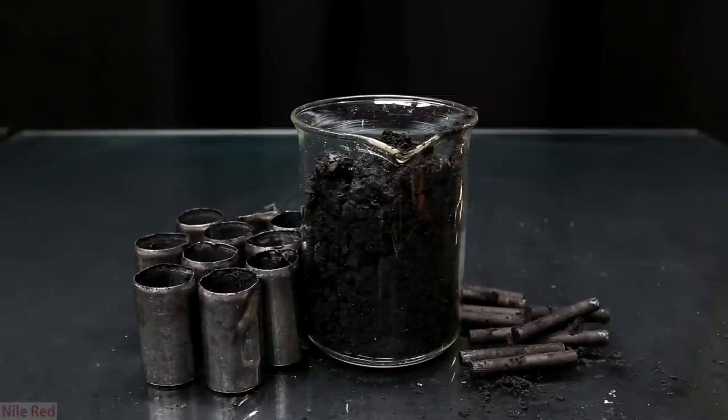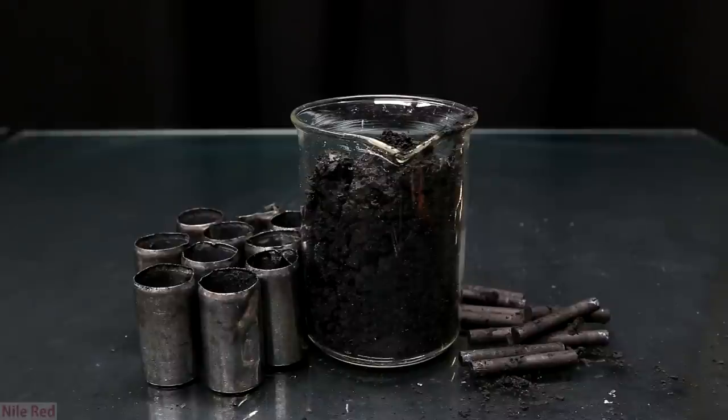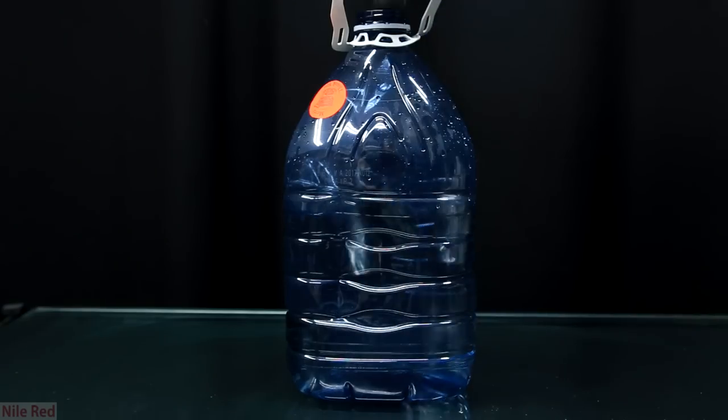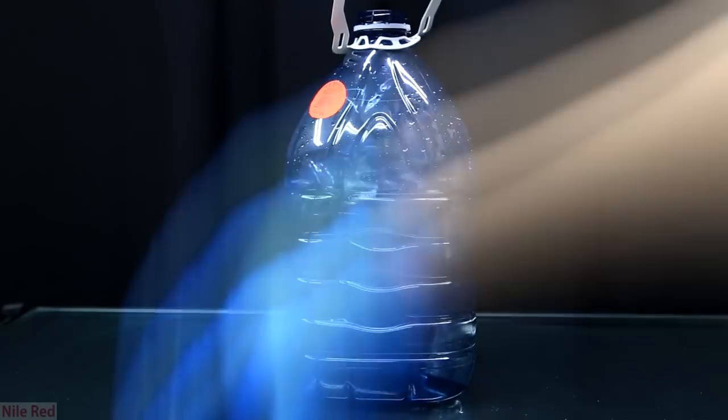So this is what all the manganese dioxide at the end looked like with all the carbon electrodes on the right and all the empty zinc cans on the left. To wash the cans and the electrodes I simply put them in a bucket of water and shook it a lot.